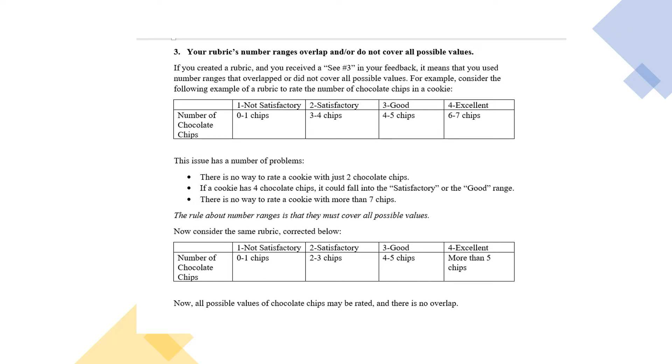See the example at the bottom. One now is zero to one chips. Two is two to three chips. Three is four to five chips and four is more than five chips. This is an example of a number range where nothing overlaps and it covers all possible example cases.